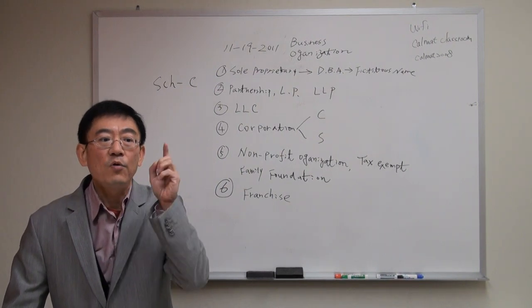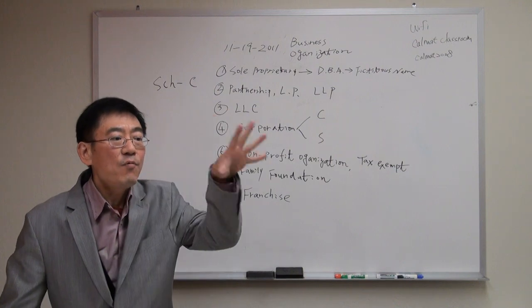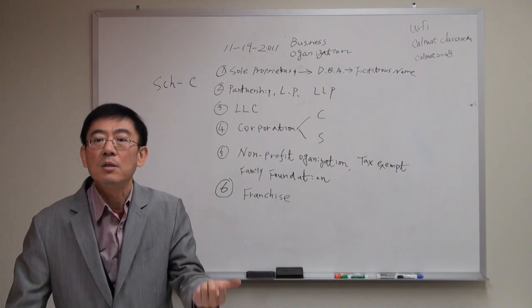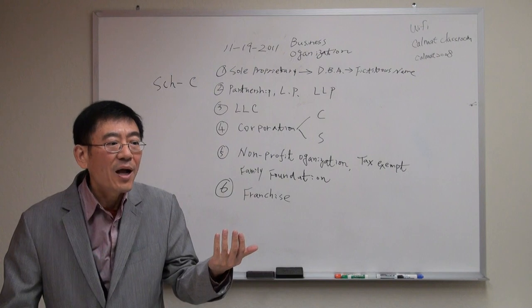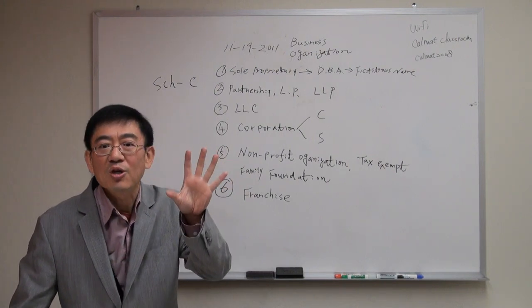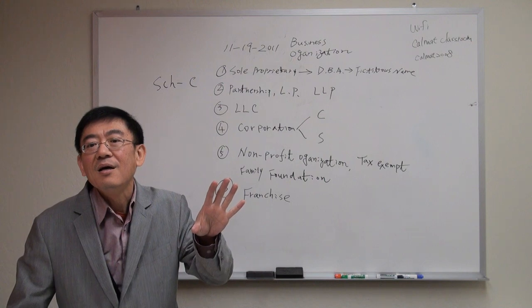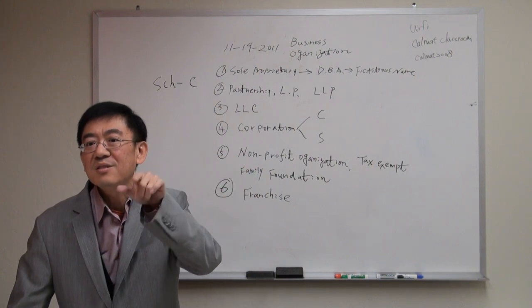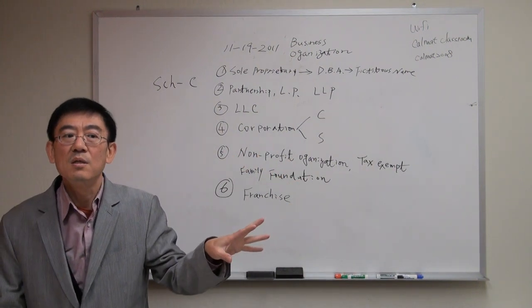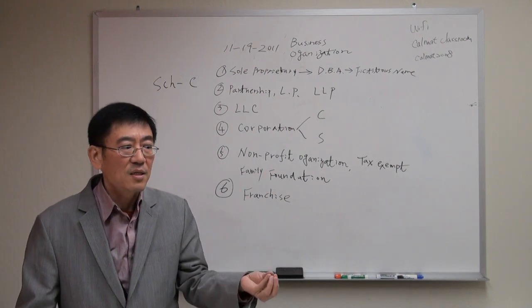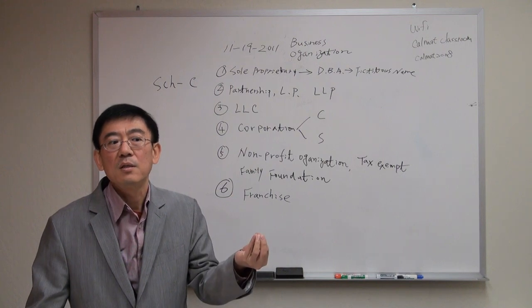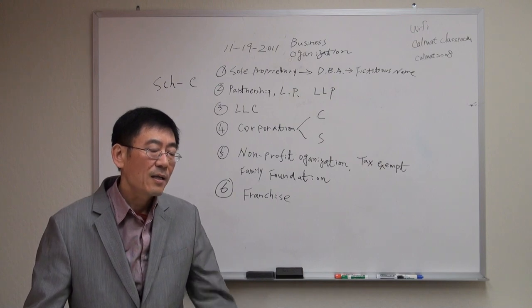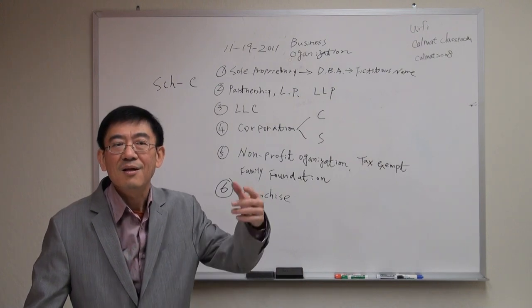Certain C corporations cannot become S corporation shareholders. You make sense. But vice versa could be. S corporation could be the C corporation shareholder. You make sense? By the way, 100 is not really the big issue. The big issue is for S corporation, every shareholder must be either US citizen or green card holder.